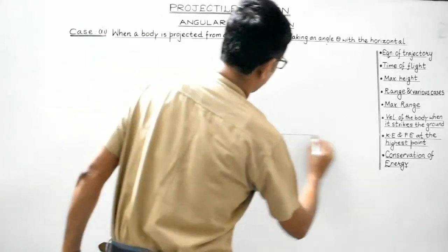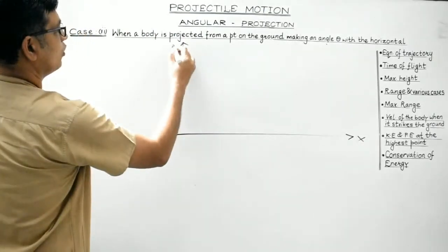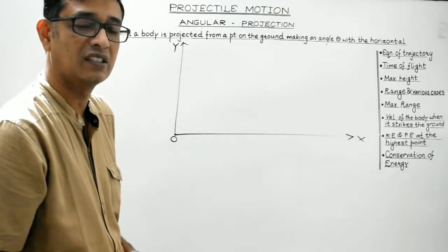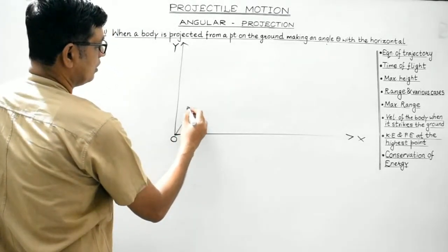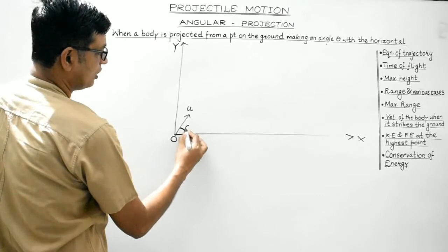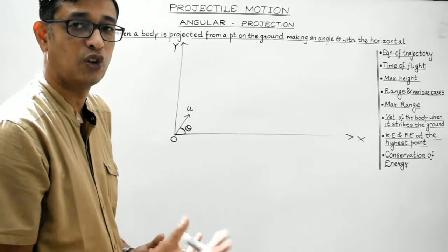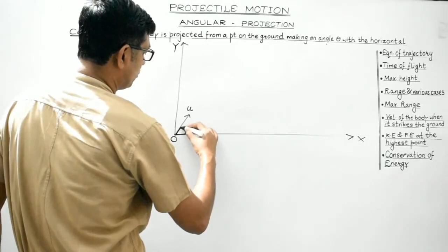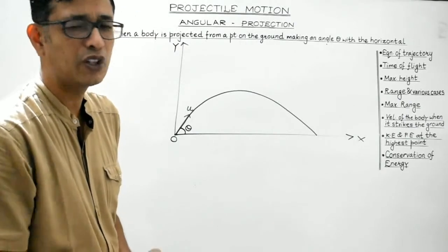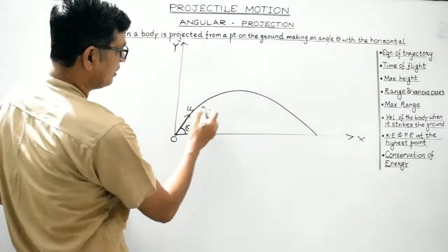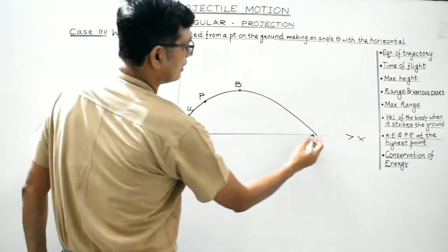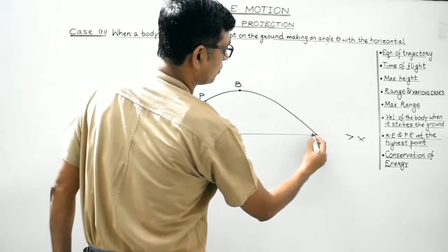Suppose this is the x-axis and this is the y-axis. This is the point O on the ground. OX is considered to be the horizontal, OY is considered to be the vertical axis. A projectile is projected with velocity u making an angle theta with the horizontal. It will follow a parabolic path. Point A is any arbitrary point, point B is the highest point, and point C is the instant when the body strikes the ground.